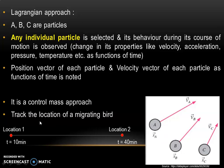Similarly, the velocity of particle at location 1 and what will be its velocity at location 2 will be noted, including the variation with time. This is a control mass approach. The example for the Lagrangian approach is to track the location of a migrating bird — at time t equal to 10 minutes its location is observed, and what will be its location at time t equal to 40 minutes is noted.